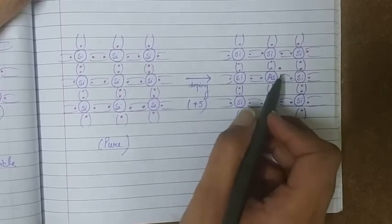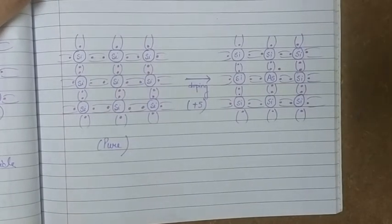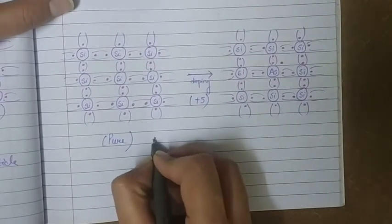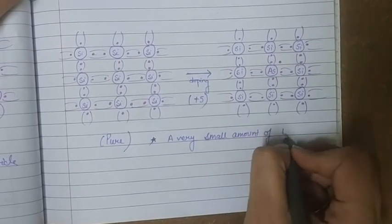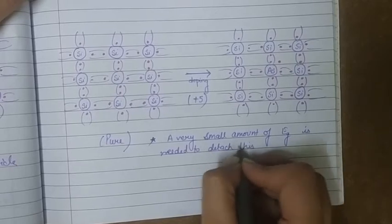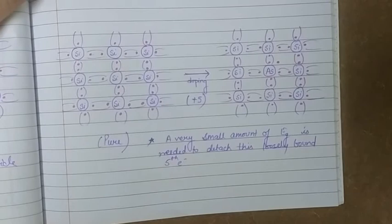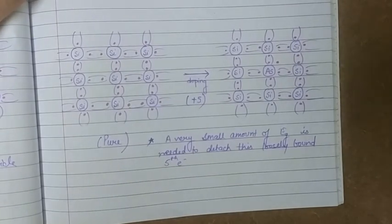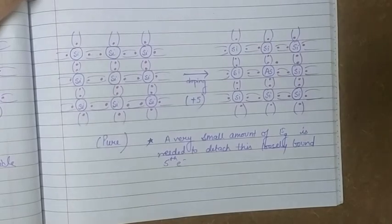This fifth electron is loosely bound to the impurity atom and does not form any covalent bond. Only a very small amount of ionization energy is needed to detach this loosely bound electron. The thermal energy at room temperature is enough to set it free, and the dopant atom gets converted into an ionized positive core. Since each pentavalent impurity atom donates one extra electron for conduction, we call them donor atoms.